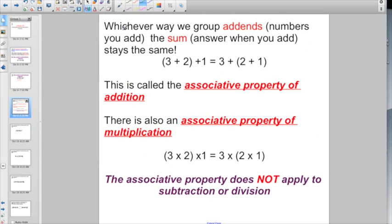One other thing we need to talk about: whichever way we group addends, which are the numbers you add, the sum—the answer when you add—stays the same. I could have (3+2)+1. That's going to give me the same answer as 3+(2+1). If you don't believe me, let's do it.